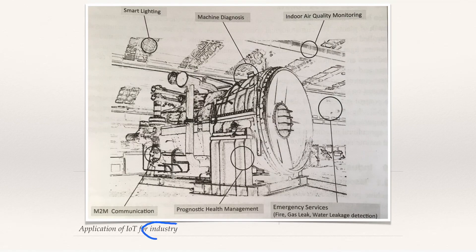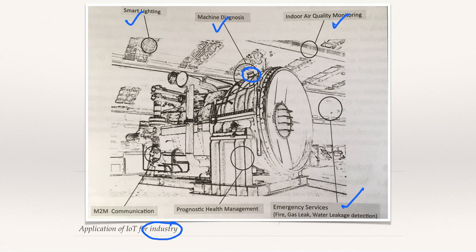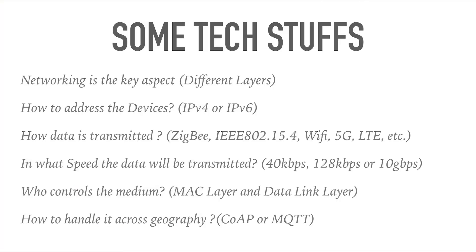For the industry and manufacturing sector, IoT enables smart lighting — active only when persons are present on the shop floor — machine diagnosis by periodically checking sound and vibrations from machines, indoor air quality monitoring for gas leakage detection, emergency services for fire, gas leakage, and water leakage detection, prognostic health management, and M2M (machine-to-machine) communication, which we will cover shortly.